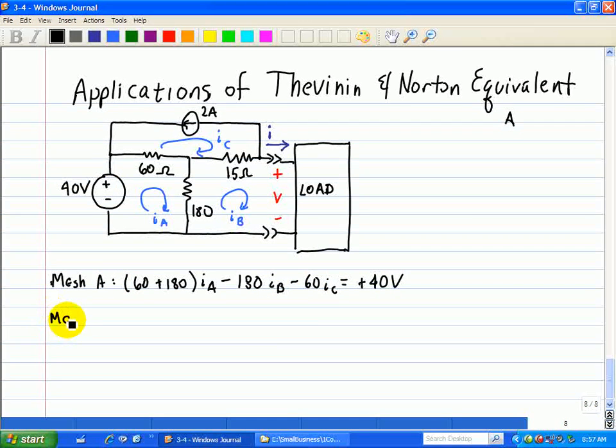For mesh B, we have the 180 and the 15 ohm. So, IB is 180 plus 15 ohm. And we have a minus 180 going in the opposite direction, 180 IA. And for the 15 ohm, we have minus 15 IC. And we have a positive V on this direction, but that means it's minus V in this equation here.